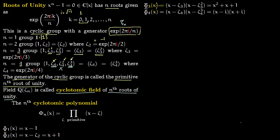For φ₃(x), there are two generators ζ₃ and ζ₃², so φ₃(x) = (x - ζ₃)(x - ζ₃²). Expanding this out, since ζ₃ = e^(2πi/3), you get x² + x + 1. For φ₄(x), the two generators are ζ₄ and ζ₄³, giving φ₄(x) = (x - ζ₄)(x - ζ₄³) = (x - i)(x + i), since ζ₄ = i and ζ₄³ = -i.